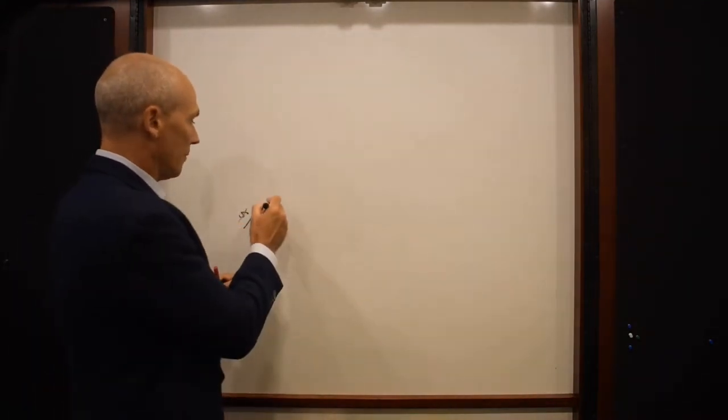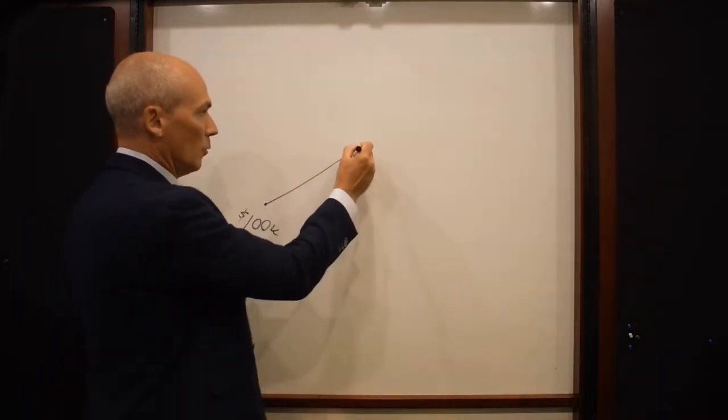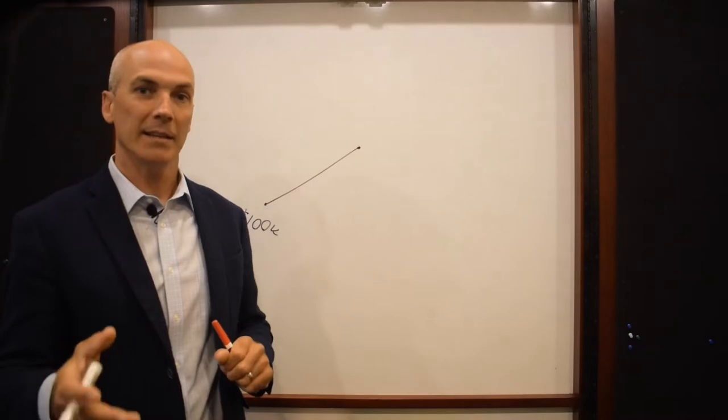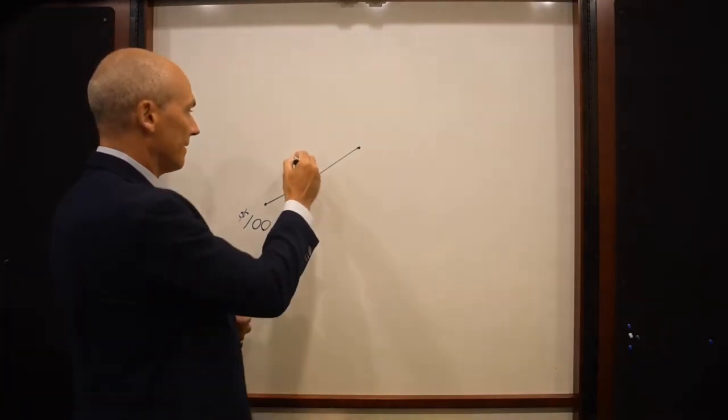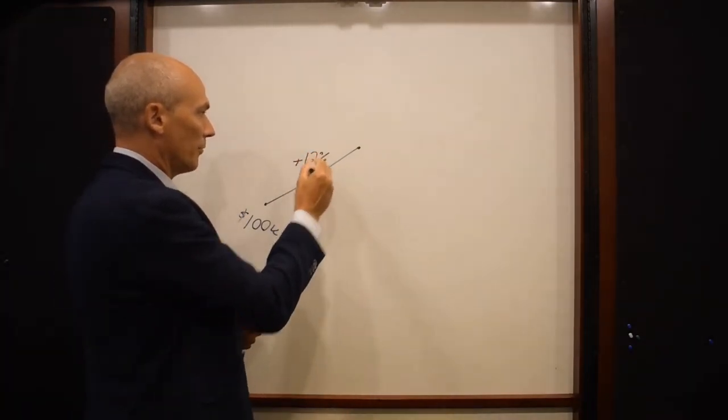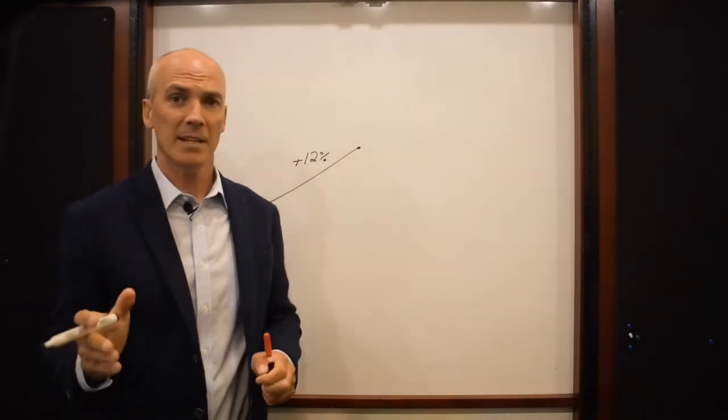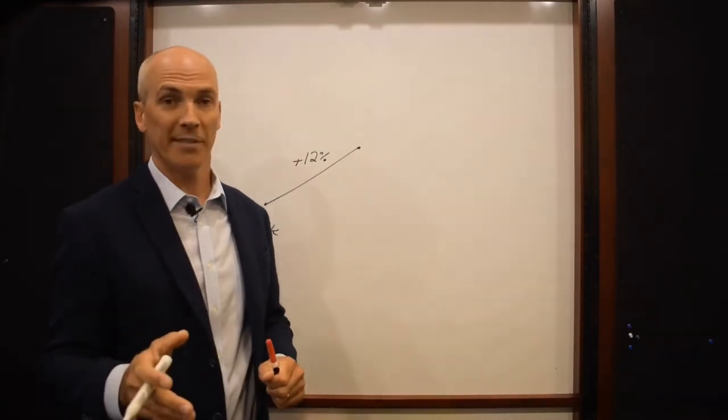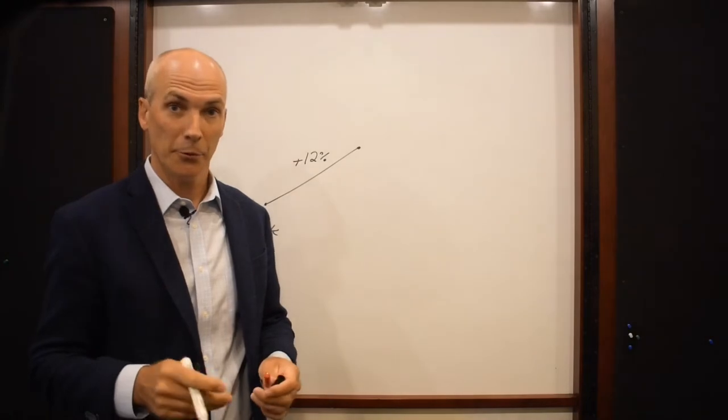So one year later or 12 months later, we're going to assume hypothetically that the S&P 500 is up point-to-point 12%. In a fixed indexed annuity, you're not going to receive a 12% interest credit.